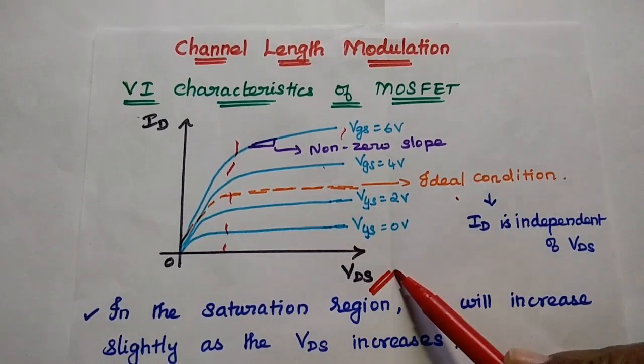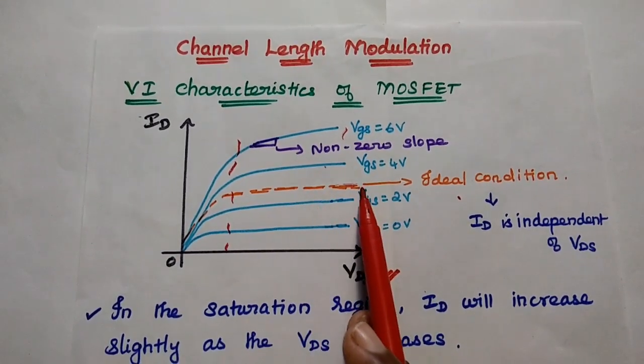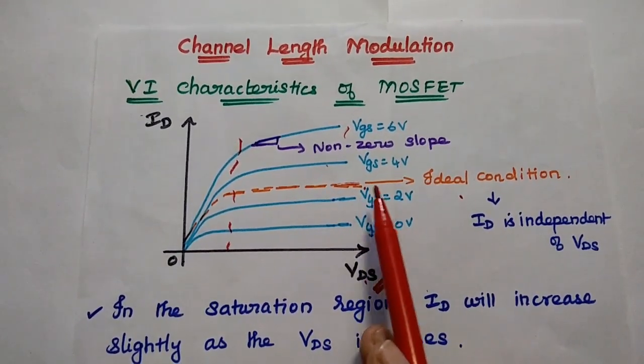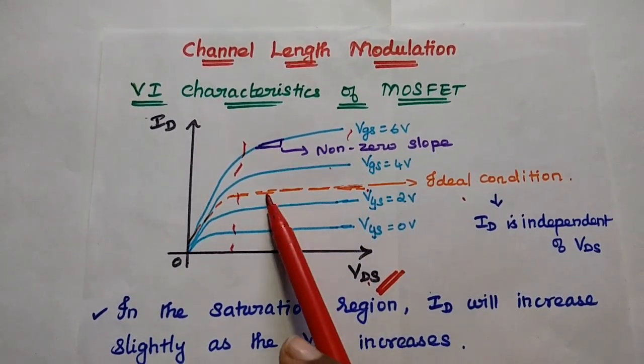If we increase VDS, it should maintain the constant level. That is the ideal condition—there is no slope, this is a straight line. But in the practical condition, when we increase VDS, there may be a slight increment in ID.